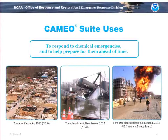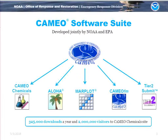Cameo is a suite of software used in emergency response, chemical emergencies especially, and it includes five components. Cameo Chemicals is a database of chemicals giving you information about their properties, dangers, and how they react with one another — it's a front-line tool used by emergency responders.